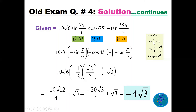We know sin(π/6) = 1/2, cos(45°) = √2/2, tan(π/3) = √3. Substituting: 10√6 · (−1/2) · (√2/2) − (−√3). Multiplying −1/2 · √2/2 = −√2/4, times 10√6 gives −10√12/4 = −20√3/4 = −5√3. Adding √3 and finding the LCD gives −4√3 as the final answer.